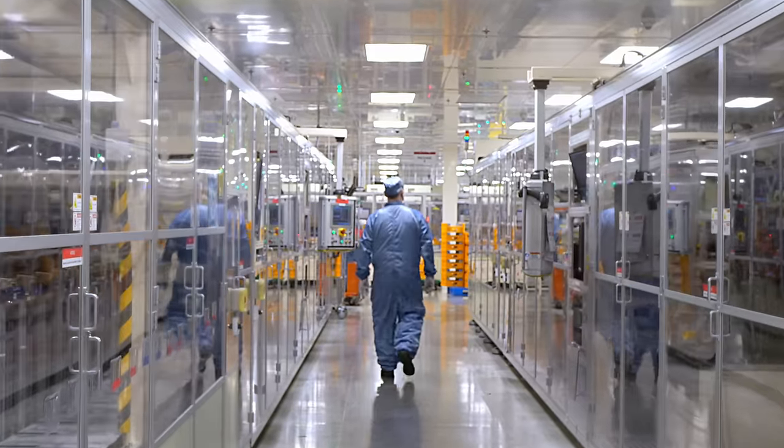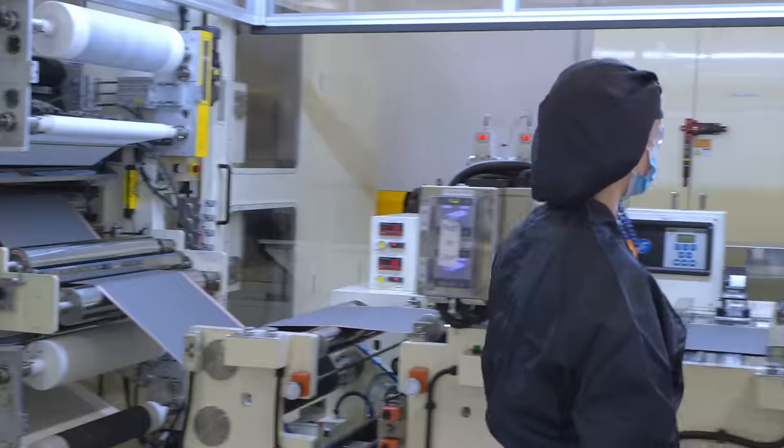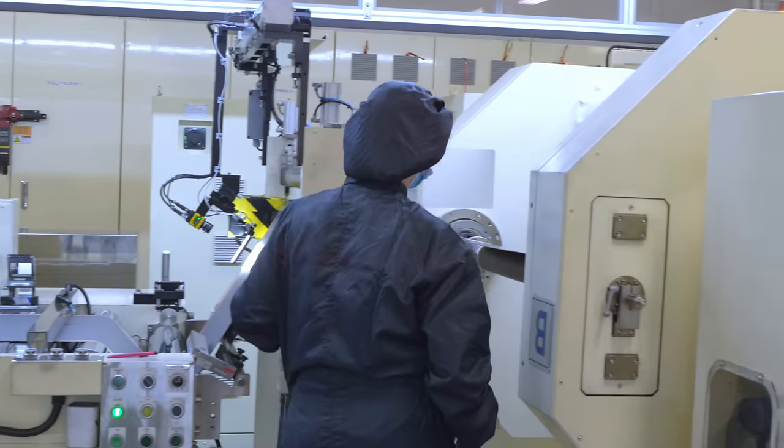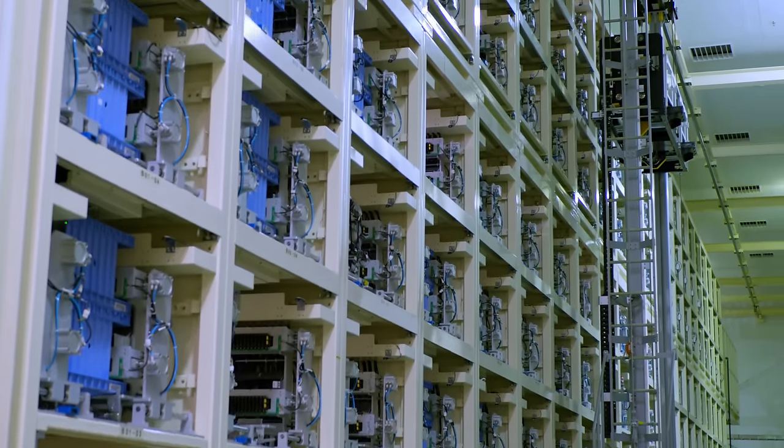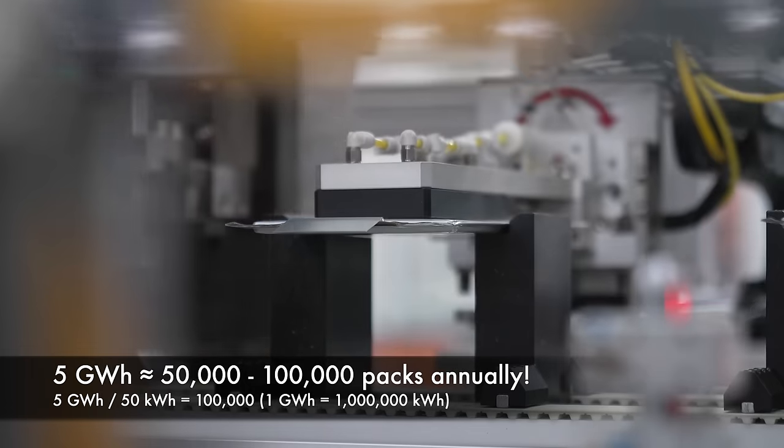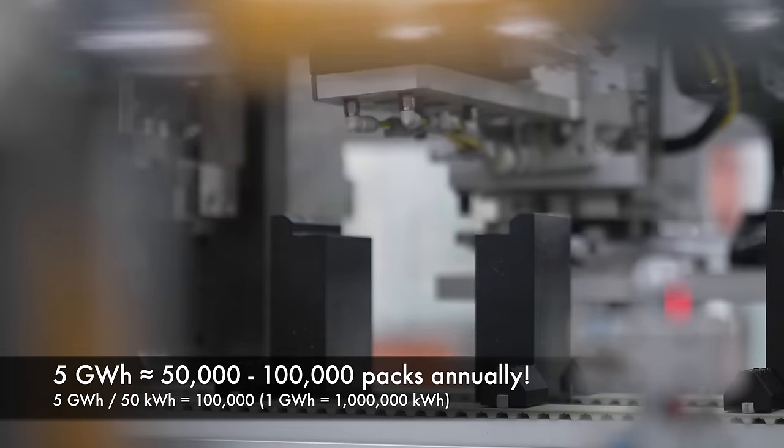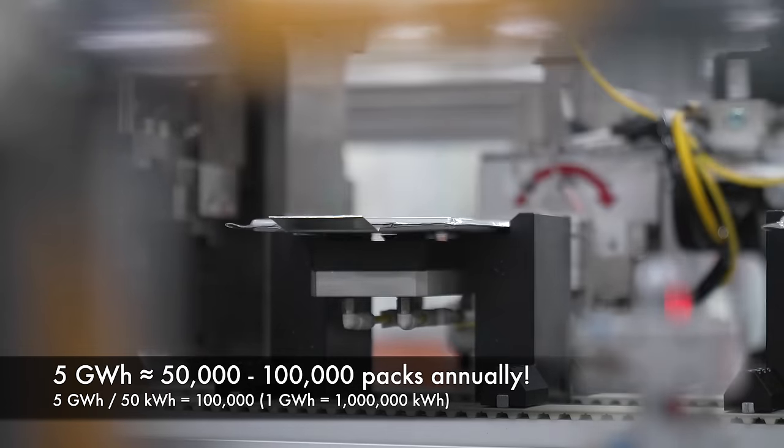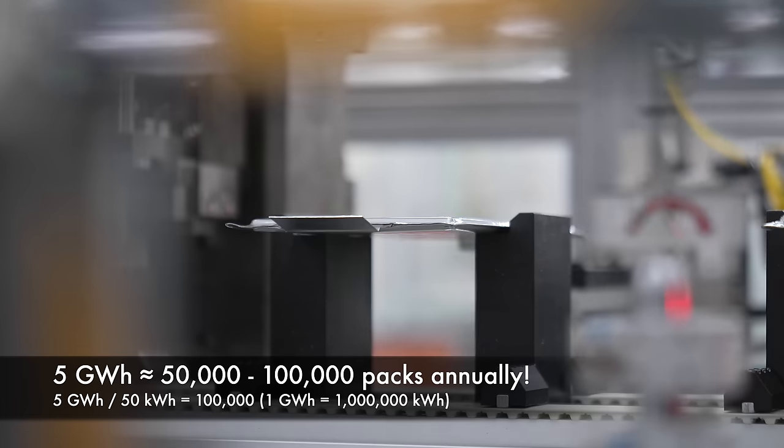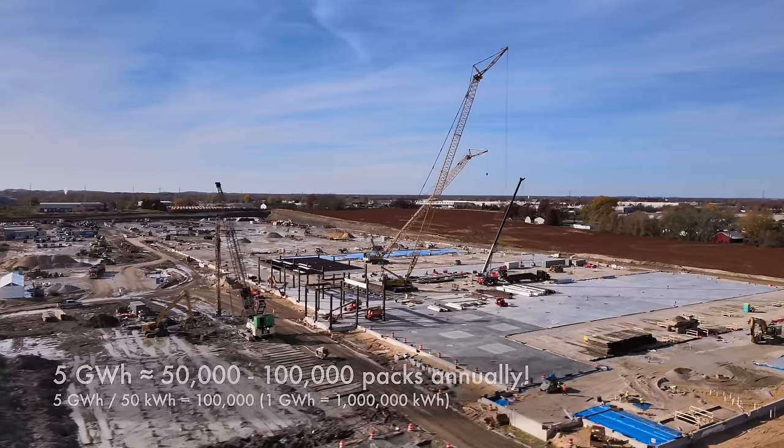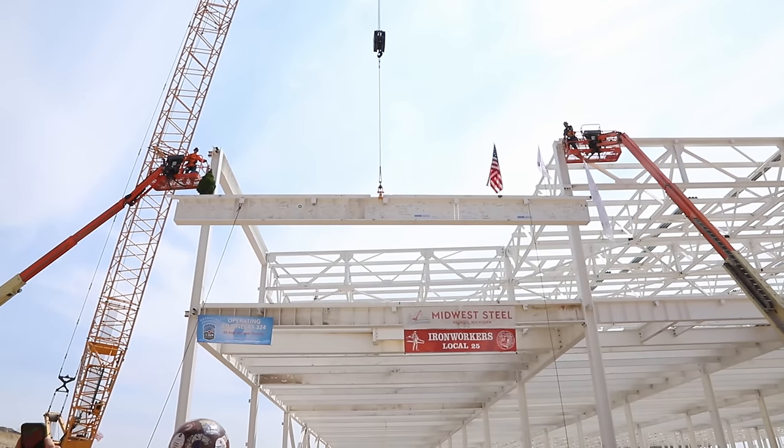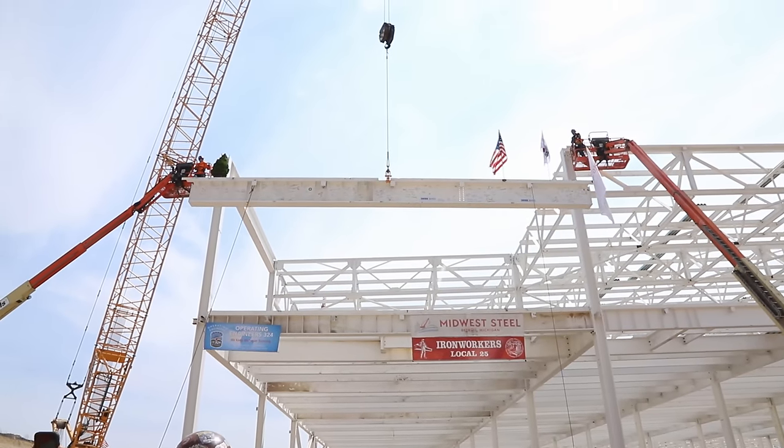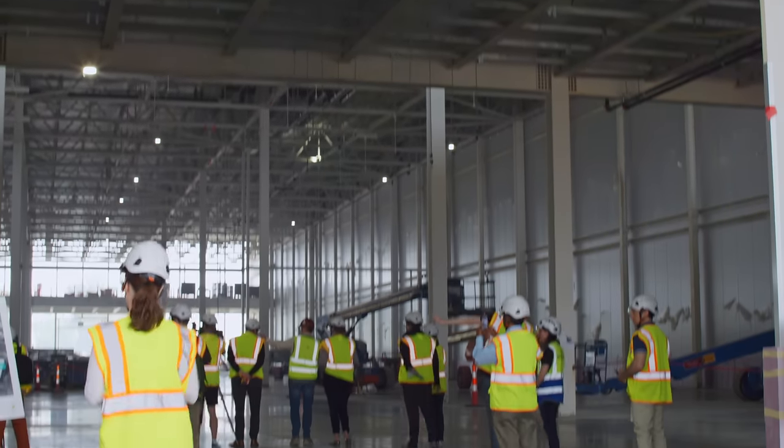Witnessing the full process took a few hours, traveling through multiple massive rooms in the LG Energy Solution Michigan One facility, which has a 5 gigawatt-hour capacity. That's the equivalent of 50,000 large 100 kilowatt-hour battery packs a year, or 100,000 smaller 50 kilowatt-hour packs. And they're currently building another facility next door which is going to provide 25 gigawatt-hours of output, with mass production expected to begin in 2025.